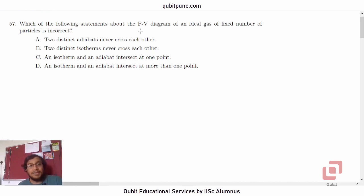Which of the following statements about the PV diagram of an ideal gas of fixed number of particles is incorrect? Option A: two distinct adiabates never cross each other. Option B: two distinct isotherms never cross each other. Option C: an isotherm and an adiabate intersect at one point. Option D: an isotherm and an adiabate intersect at more than one point.